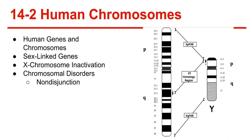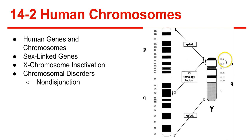Sex-linked genes: genes located on the X and Y chromosome are called sex-linked genes. Because the X chromosome is so much larger, it contains many more sex-linked genes. As we can see from the diagram, there are many more gene numbers on the X chromosome, while the Y chromosome has far fewer.